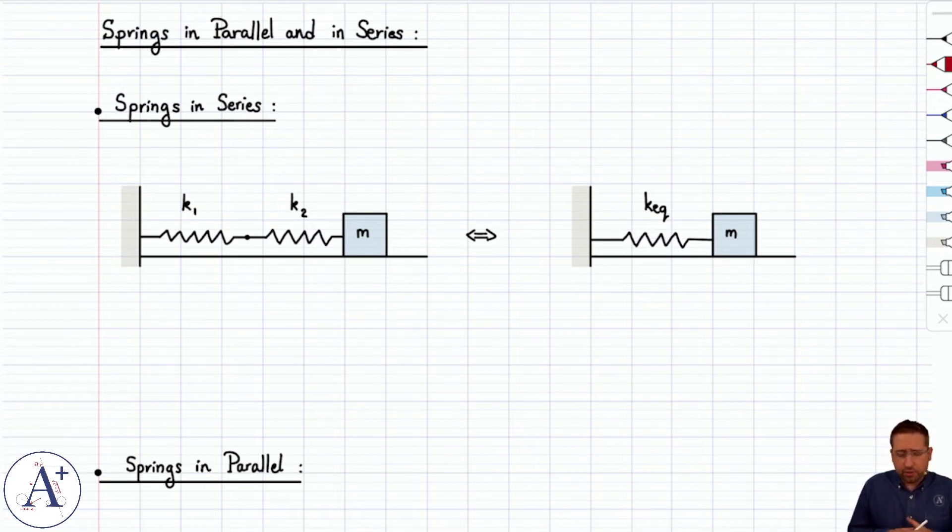We're actually going to start with springs in series because it's a little easier to visualize and recognize when two springs are in series. But the main idea overall, whether series or parallel, is to say that now we could have one mass with multiple springs, and there's a way to take that arrangement and simplify it down to the same mass with one single equivalent spring.